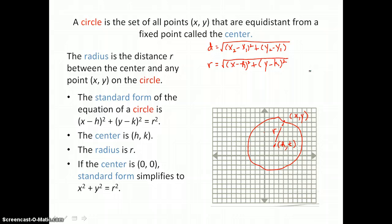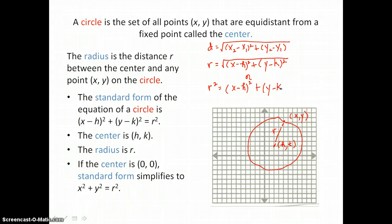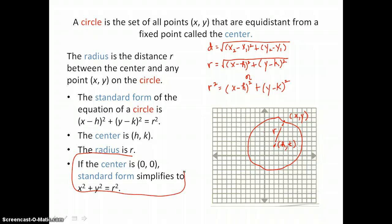This gives us an equation of our circle, and if we square both sides to get rid of the radical on the right, we can write the equation of our circle as r squared equals the quantity x minus h squared plus y minus k squared. That's standard form for the equation of a circle. Now if this circle is centered at the origin and h and k are both zero, our equation simplifies to x squared plus y squared equals r squared.